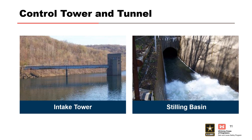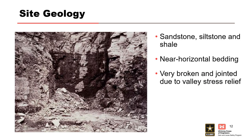The outlet works consist of a 10-foot diameter, 1,250-foot long concrete-lined tunnel through rock in the right abutment, a gated control tower, and a stilling basin. The foundation and abutment rock consists of sandstone, siltstone, and shale with near-horizontal bedding. As shown in the photo, the rock is very broken with significant joints and fractures on the abutments due to valley stress relief.